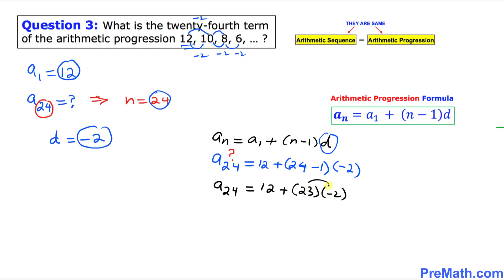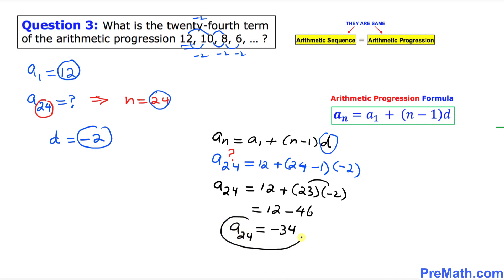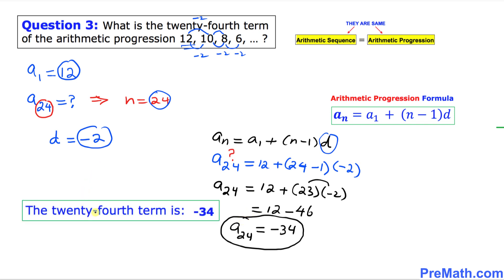Multiplying 23 times negative 2 gives us negative 46. So a sub 24 equals 12 minus 46, which is negative 34. Thus the 24th term turns out to be negative 34, and that is our answer.